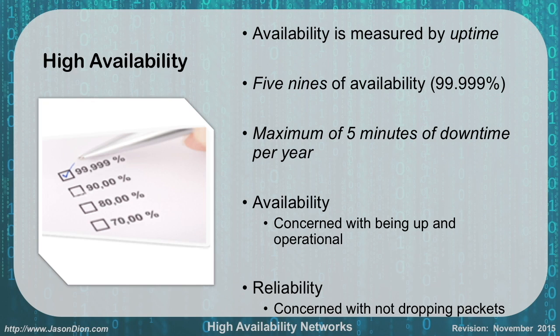That's pretty hard to do. If you just do a weekly reboot, you're going to bust through that five minutes per year. So we need to come up with options that will keep these networks up, available, and reliable all year round. Our availability is concerned with being up and operational at all times. Our reliability is concerned with not dropping packets. So if we have a very high availability network that's up all the time but it's dropping packets a lot, it can be highly available but not very reliable.